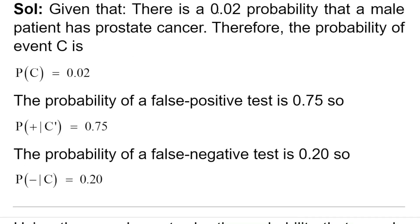The probability that a male patient has prostate cancer is 0.02, so the probability of event C equals 0.02. The probability of a false positive test is 0.75, so the conditional probability that the test gives a positive result given that the patient does not have cancer is 0.75. The probability of a false negative test is 0.20, meaning the conditional probability that the test gives a negative result given that the patient has cancer is 0.20.